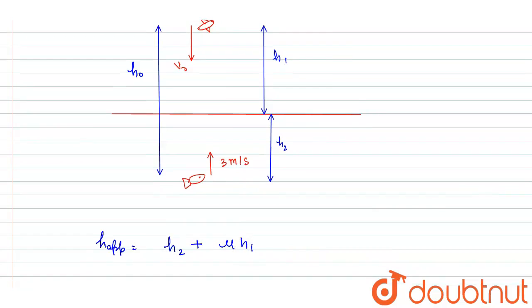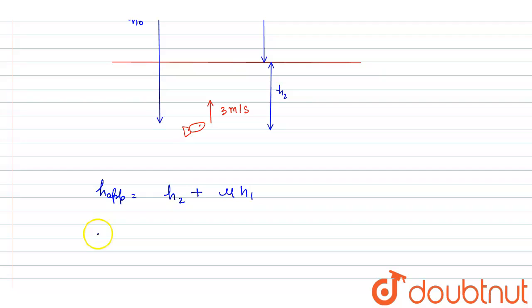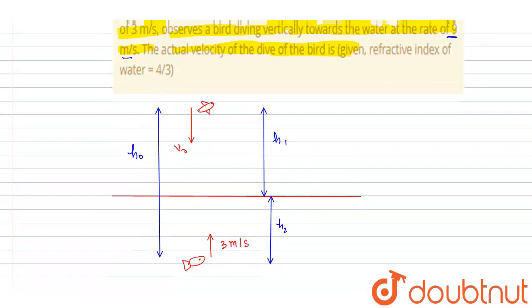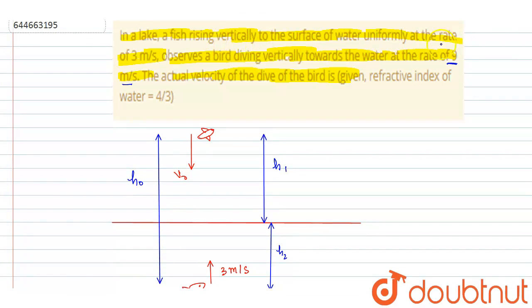Right, and if I differentiate both sides, I will write dh_apparent/dt equals dh₂/dt plus μ dh₁/dt. So it is said that the fish observes that the bird is moving toward the fish with a velocity of 9 meters per second.